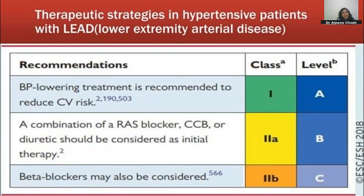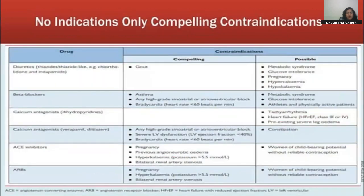In lower extremity arterial disease (peripheral arterial disease), this is more common in patients with other atherosclerotic disease such as CAD. A combination of RAS blocker with a CCB or diuretic should be considered. Beta blockers can also be considered as they lower cardiovascular risk in these patients.